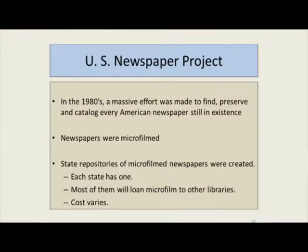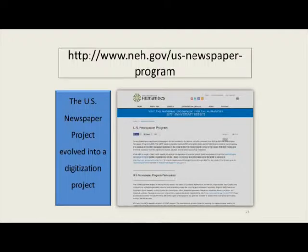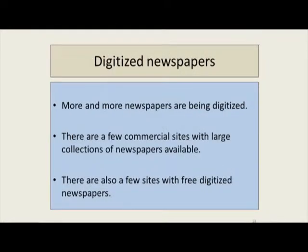In the 1980s, there was a massive effort to find, preserve, and catalog every American newspaper still in existence. Newspapers were microfilmed, and state repositories of microfilm newspapers were created — each state has one. Most will loan microfilm to other libraries, and the cost varies. At some point, that project evolved into a digitization project, so now a lot of those newspapers are available online. The number of newspapers available online is growing, with more being digitized every day.